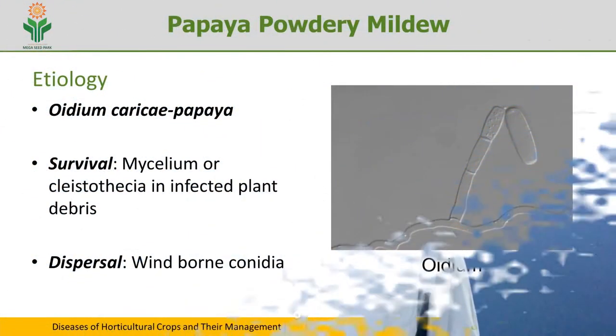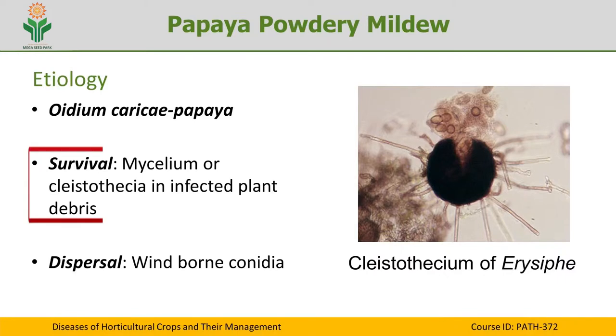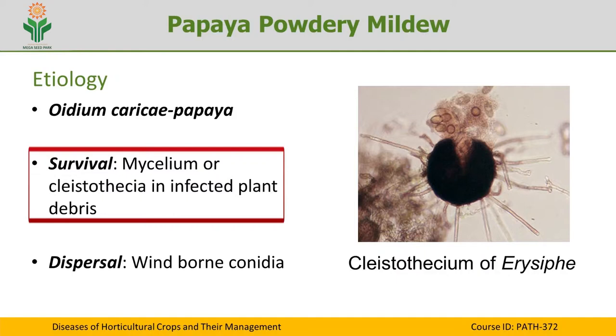In its conidial stage, Oidium is capable of producing a number of conidia in chains. These conidia are barrel-shaped and are produced on unbranched conidiophores, which is an important character of Oidium. The fungus usually survives as mycelium or cleistothecia in infected plant debris — that is, the primary inoculum always comes from infected plant debris.